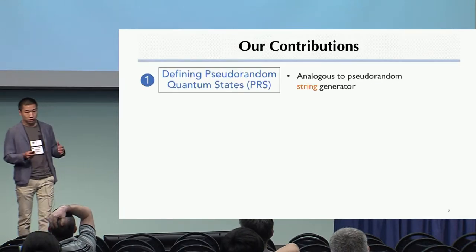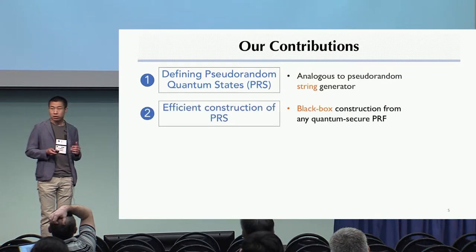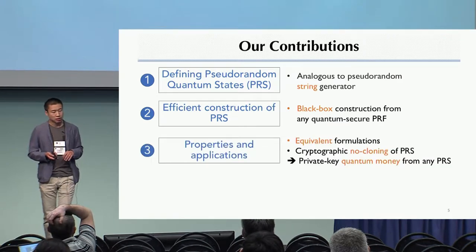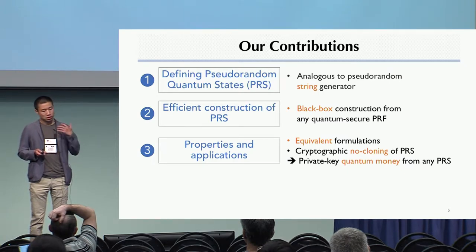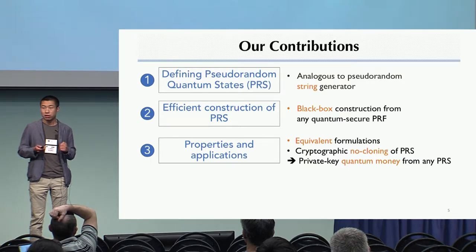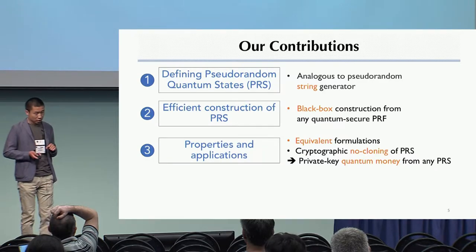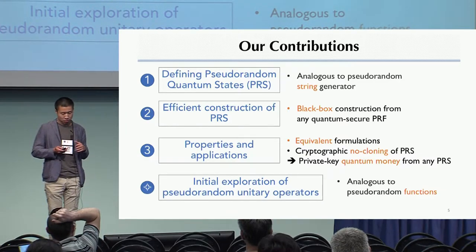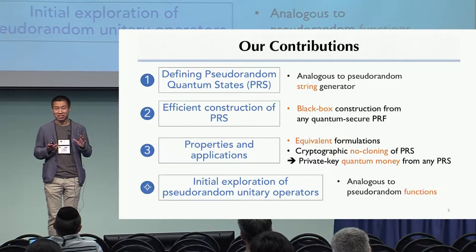And that's what we explore in this work towards developing a theory of quantum pseudorandomness. So first of all, we propose a definition of primitive called pseudorandom quantum states, which is analogous to pseudorandom generators. And we give efficient construction which uses any quantum secure pseudorandom function as a black box. And then we investigate all the nice properties and applications. And the most interesting one is the construction of a private key quantum money from any pseudorandom state due to a seemingly stronger but equivalent formulation of pseudorandom states and also a non-cloning property of pseudorandom states. And finally, we take an initial step for studying pseudorandom unitary operators, which is analogous to pseudorandom functions. So we propose a definition and give several candidate constructions. Unfortunately, we're yet to prove them.